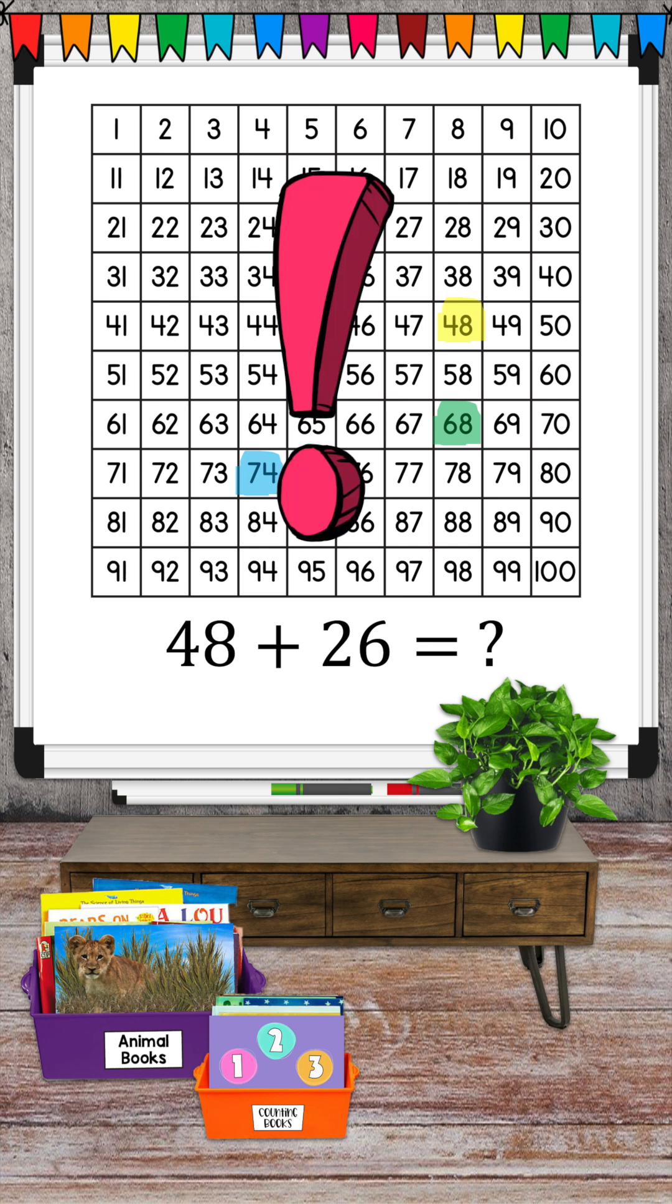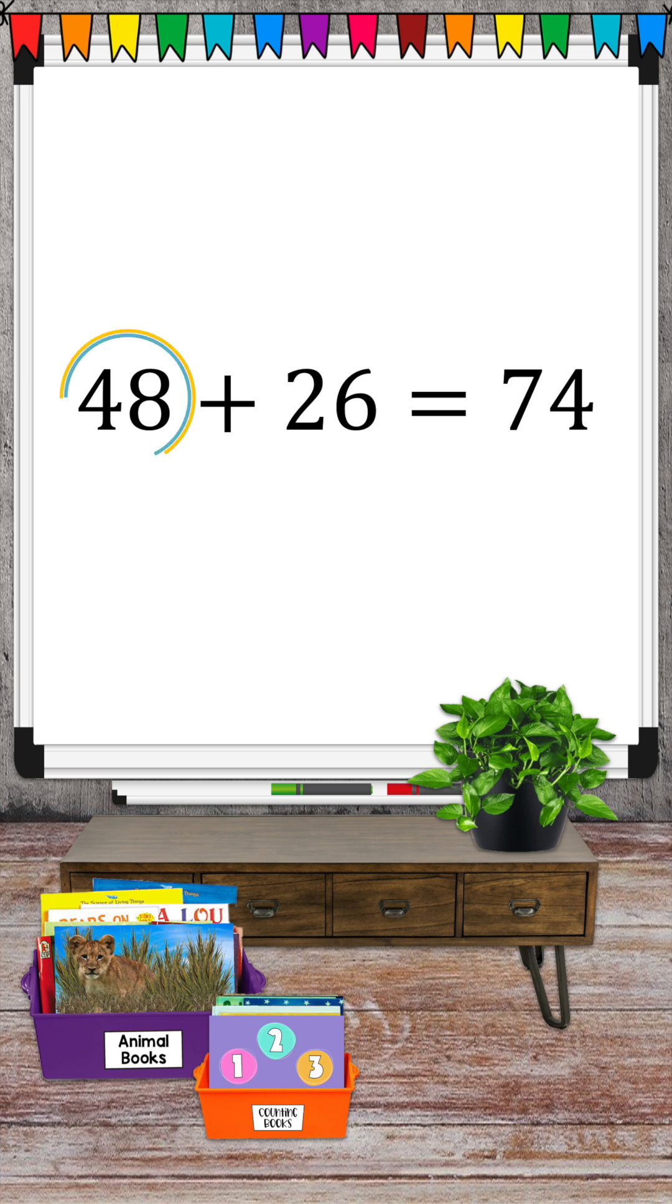And we've completed our two-digit addition sentence using a hundreds chart. 48 plus 26 equals 74.